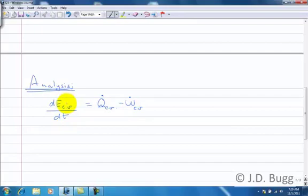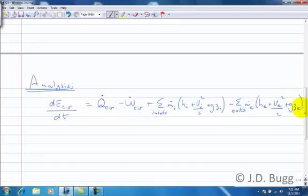So rate of change of energy in the control volume is equal to the rate of heat transfer minus the rate of work transfer, plus a summation over the inlets, mass flow rate at the inlet, enthalpy, kinetic energy, plus potential energy, minus exactly the same thing at exits. And notice there's two exits in this problem. So that's why the summation sign is there. But it's the same three terms: enthalpy, kinetic energy, and potential energy.